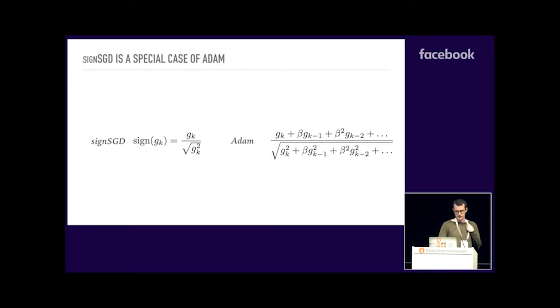And if you like momentum, we have another algorithm, which we call Signum, which takes the sign of the momentum. That's the one we're actually going to benchmark in the experiment. It retains the compression property.